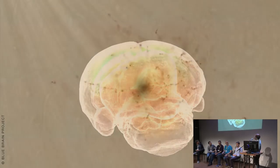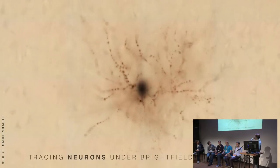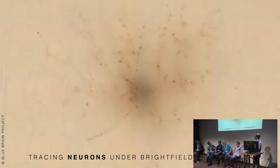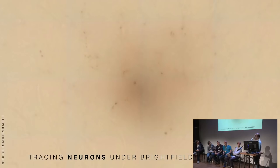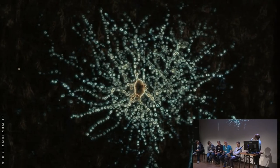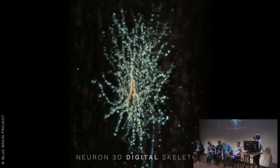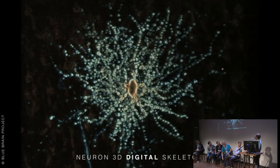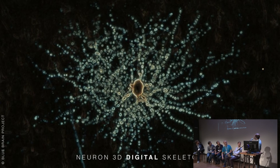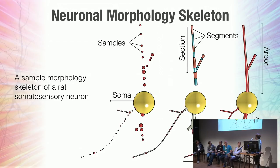If we use an optical microscope, like a bright field microscope, we can do experiments in the lab to reconstruct three-dimensional samples, points. If we try to segment the stack, we can end up with a rough skeleton of a neuron. From then we define a neuronal morphology, with which we can identify the soma or cell body, and the different points along the morphology. If we connect these points — we call them samples — we end up having sections.